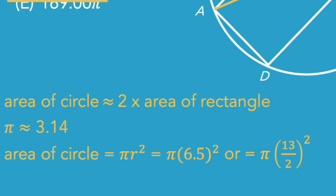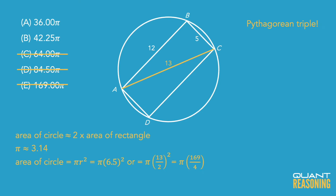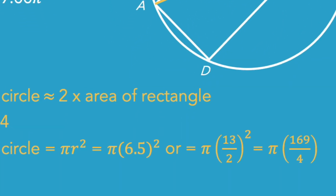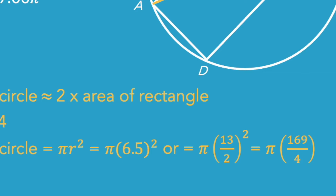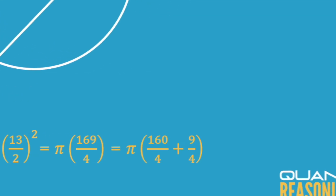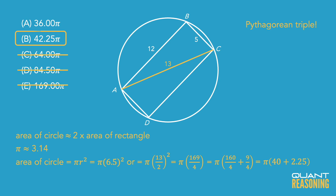You can probably already pick out answer choice B, because half of 13 is 6 and a half, and 6 and a half squared is going to be a bit more than 36, so we're looking for an answer that's higher than 36π. But if you wanted to get an exact answer, instead of calling it 6 and a half, keep it as a fraction — 13 halves — then square that fraction: 13 squared is 169, 2 squared is 4, so we're dividing 169 by 4, which is 160/4 plus 9/4, so that's 40 plus 2 plus a quarter, or 42.25π — and that's answer choice B.